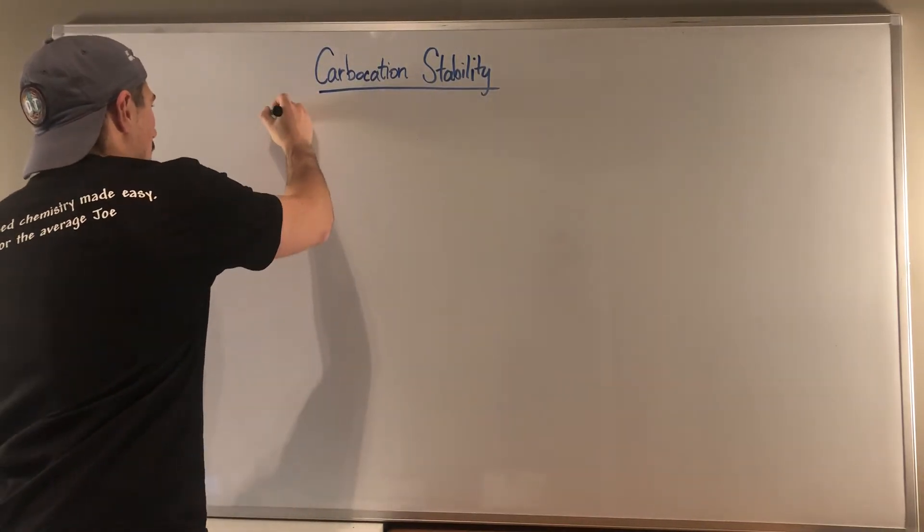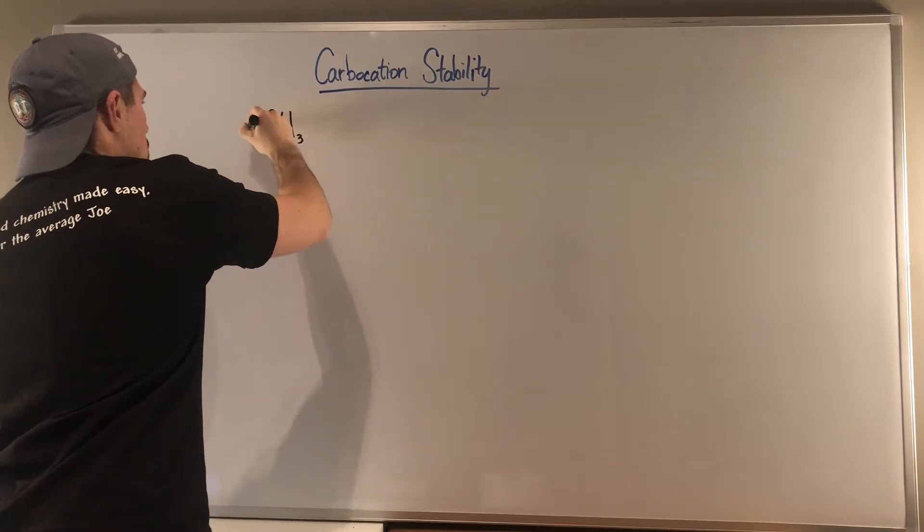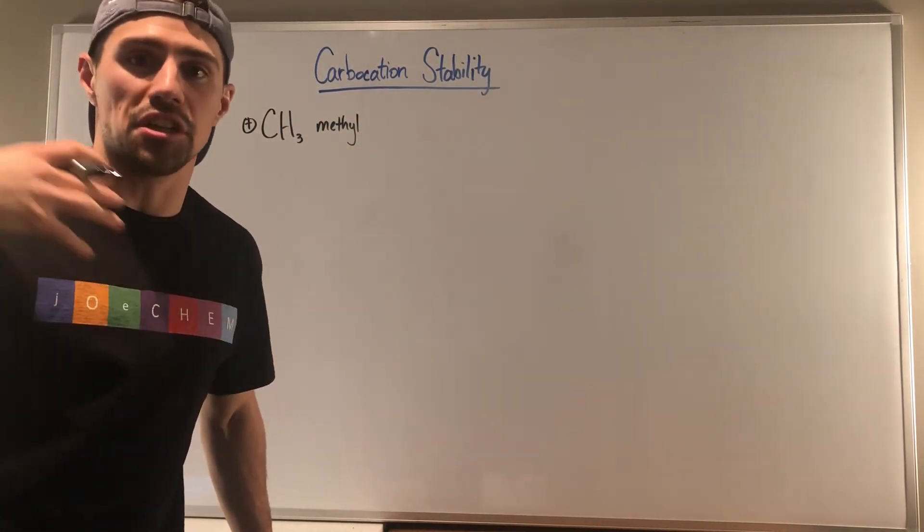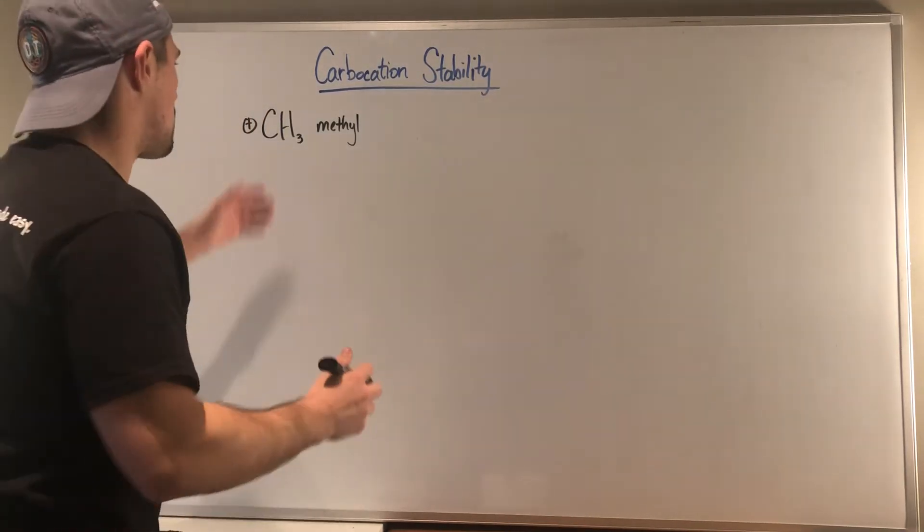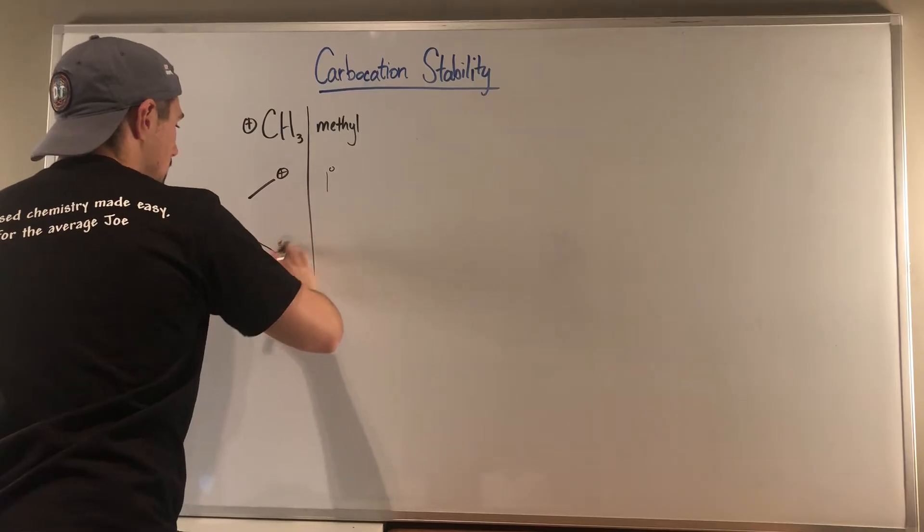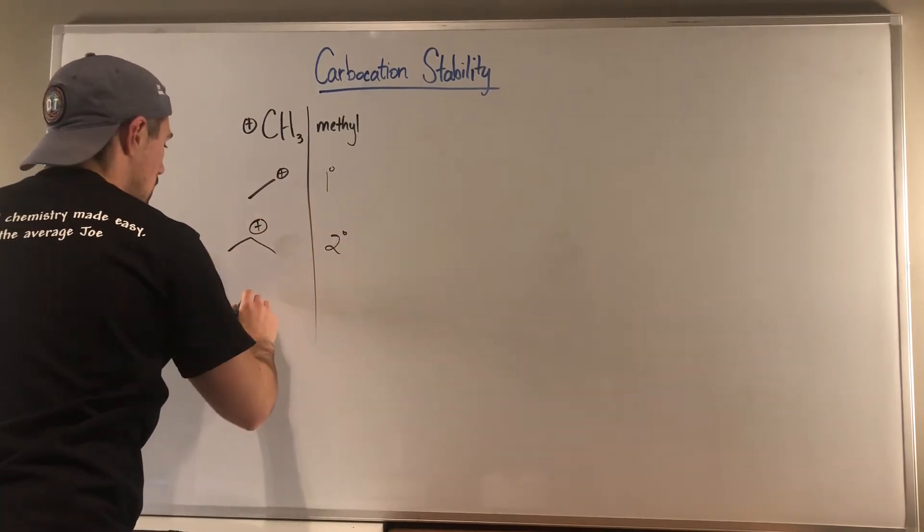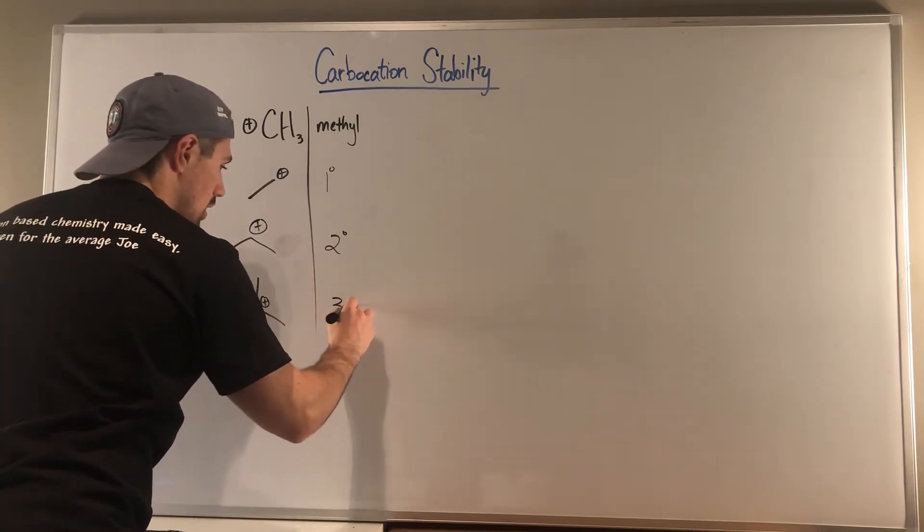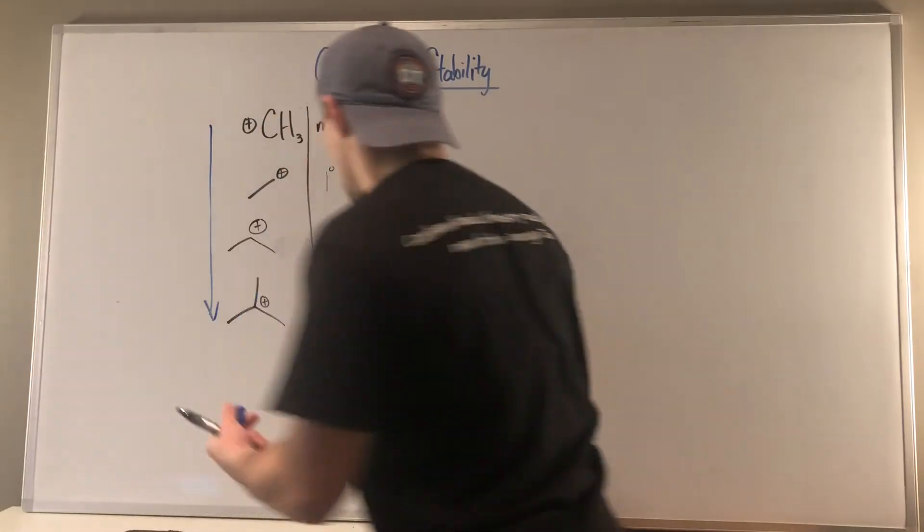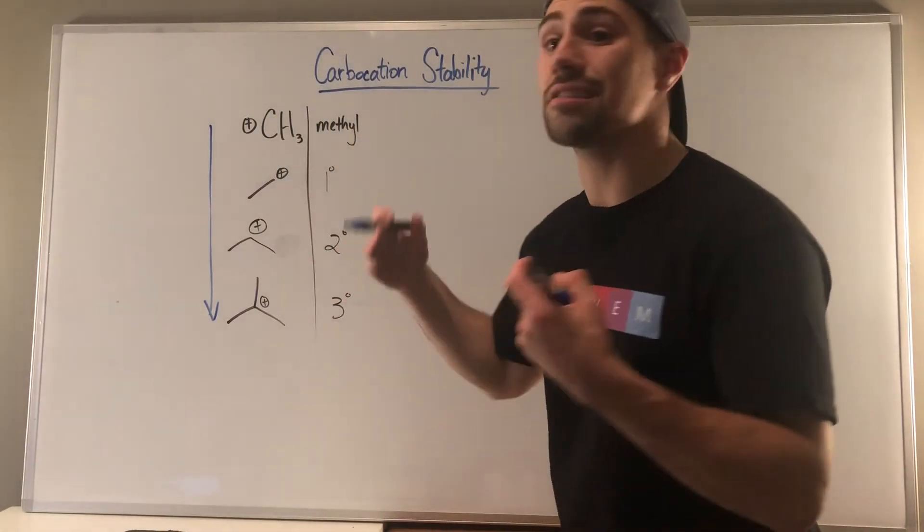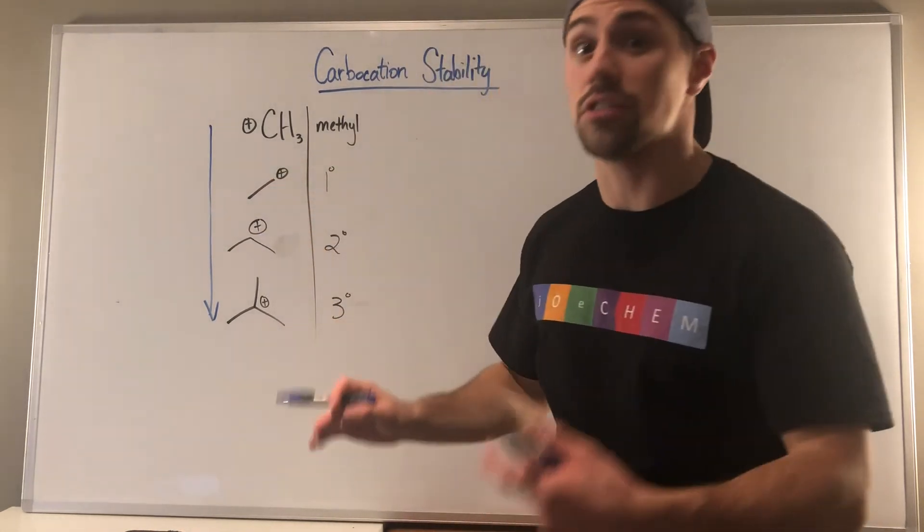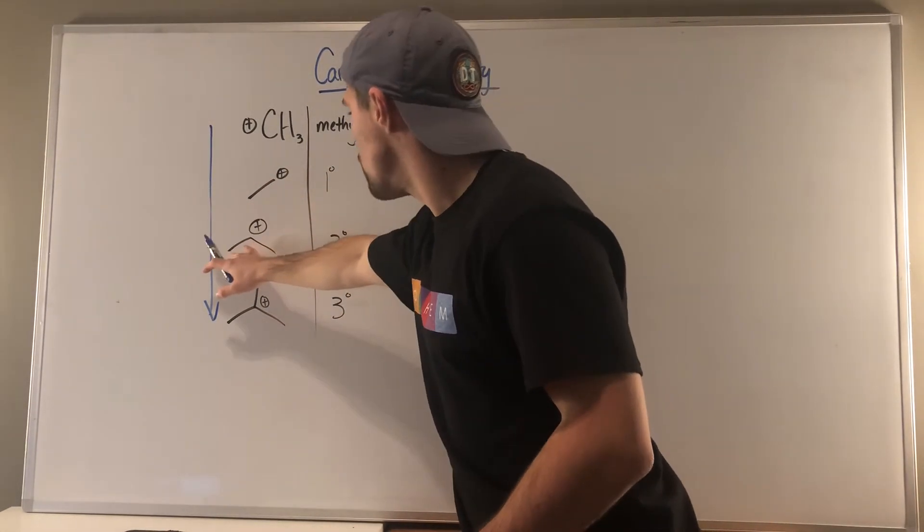Okay, so the simplest carbocation we could technically have would be if we had a CH3 with a positive charge, a methyl carbocation. The rule in carbocation land is the more neighbors that you're attached to, the more stable you are. So if we had something like methyl, primary, secondary, and tertiary, as you can see, going down this way, we're getting more substituted. Substituted meaning the carbon that is lacking the full octet, the carbocation, is being attached to more things. Here we're just attached to three hydrogens, no carbons. Here, one carbon, two carbons, three carbons.